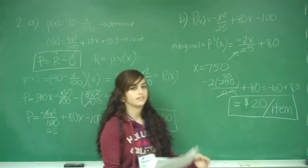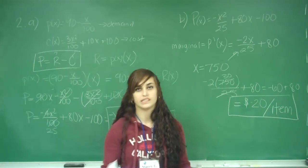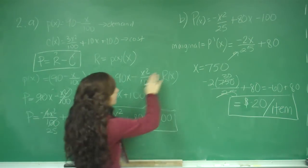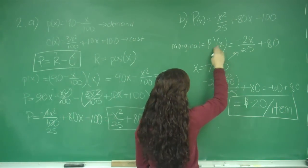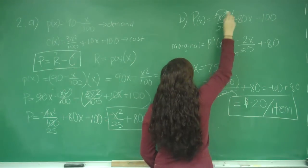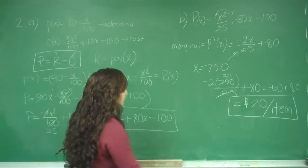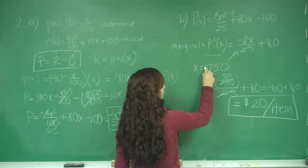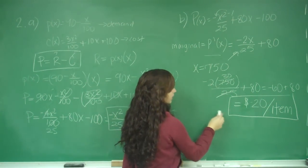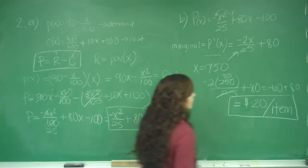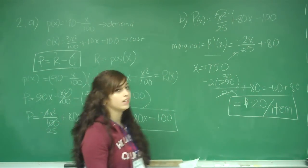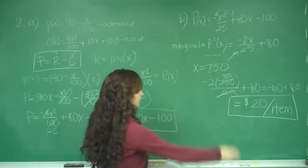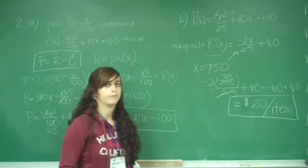For part B, to find marginal profit we take our profit function and find its derivative using the power rule — bring down the exponent and subtract 1. With x = 750 plugged in, we get 20. Profit is how much money you make per item that you sell, so the interpretation is $20 per item. That's part B.